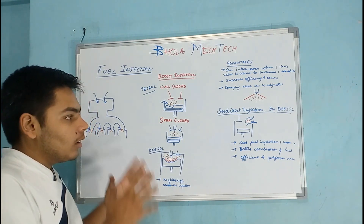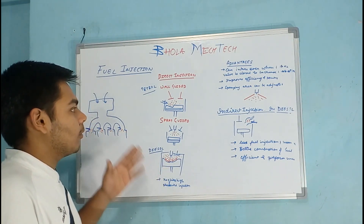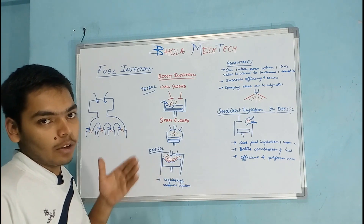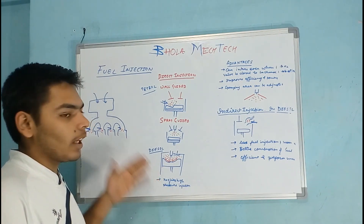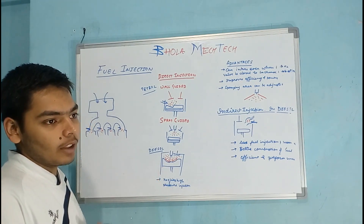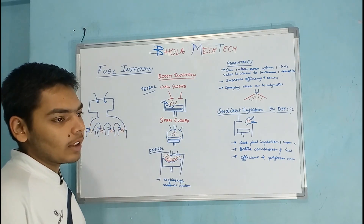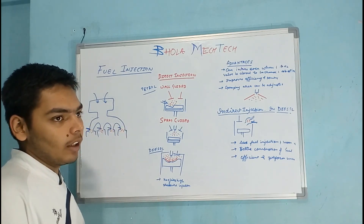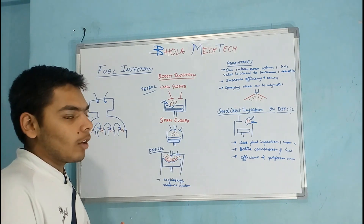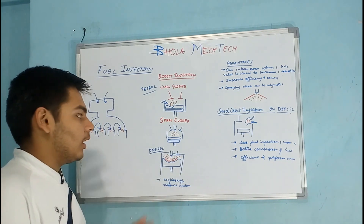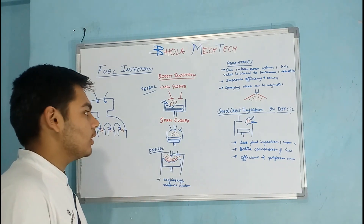In the direct injection system, the fuel injector is directly placed into the cylinder, where the injection of the fuel takes place inside the cylinder directly — not in the inlet manifold, not in the carburetor. The fuel is directly injected into the cylinder.